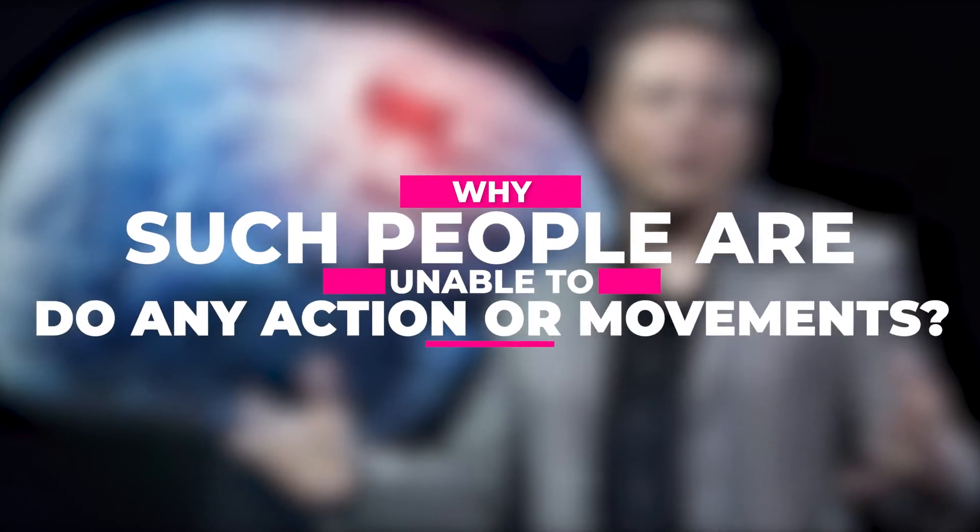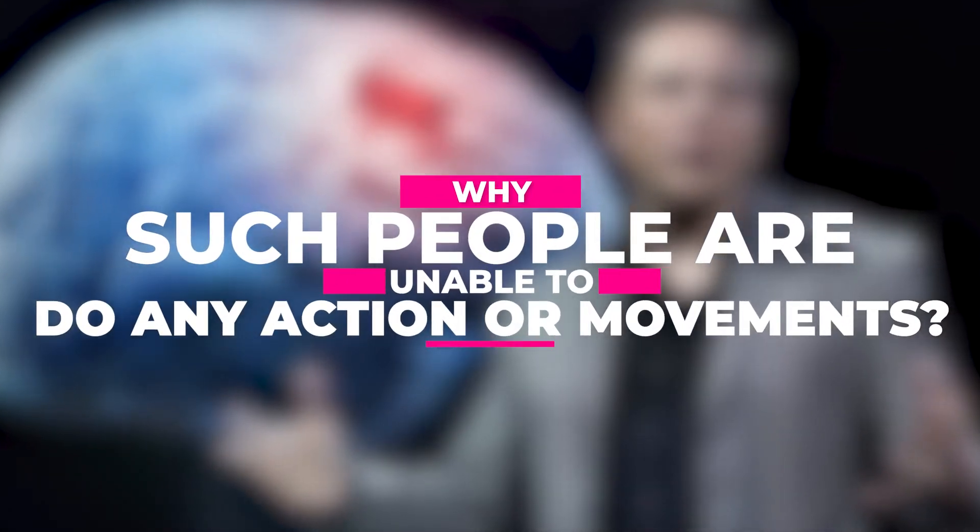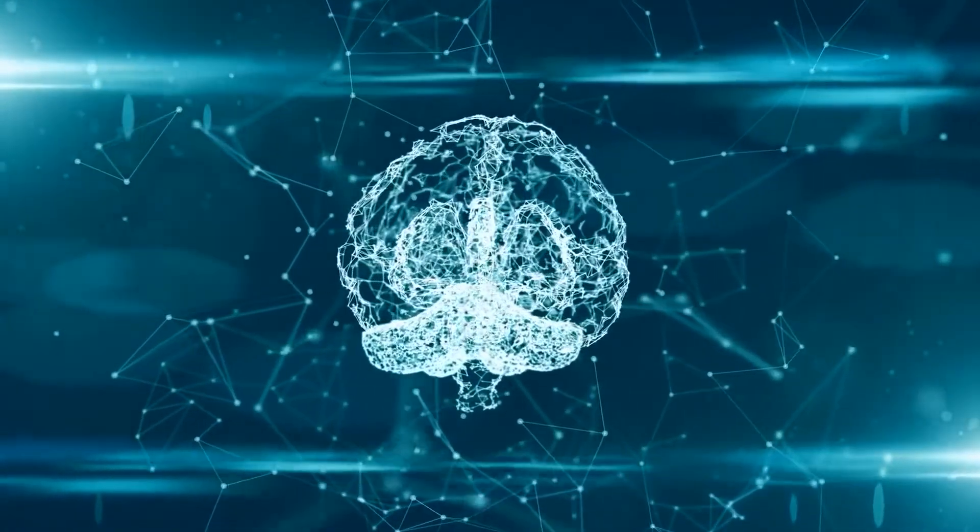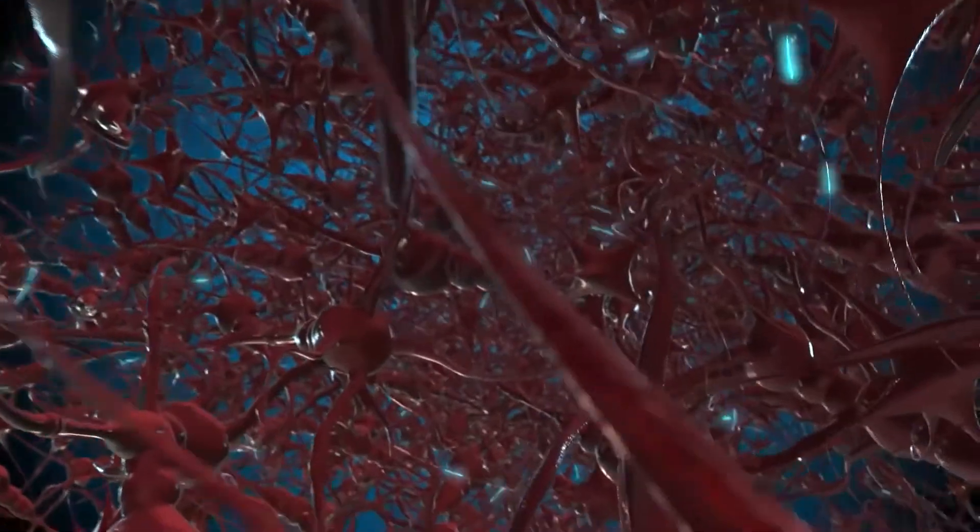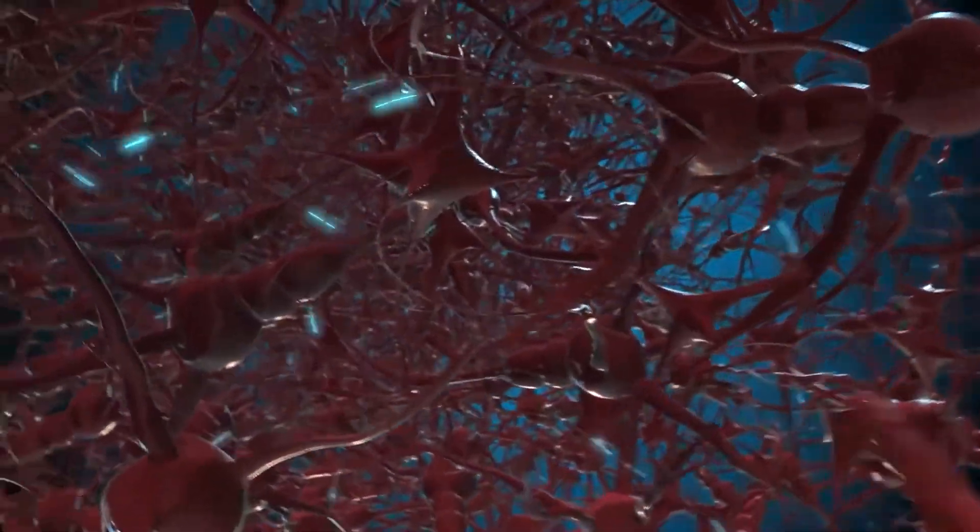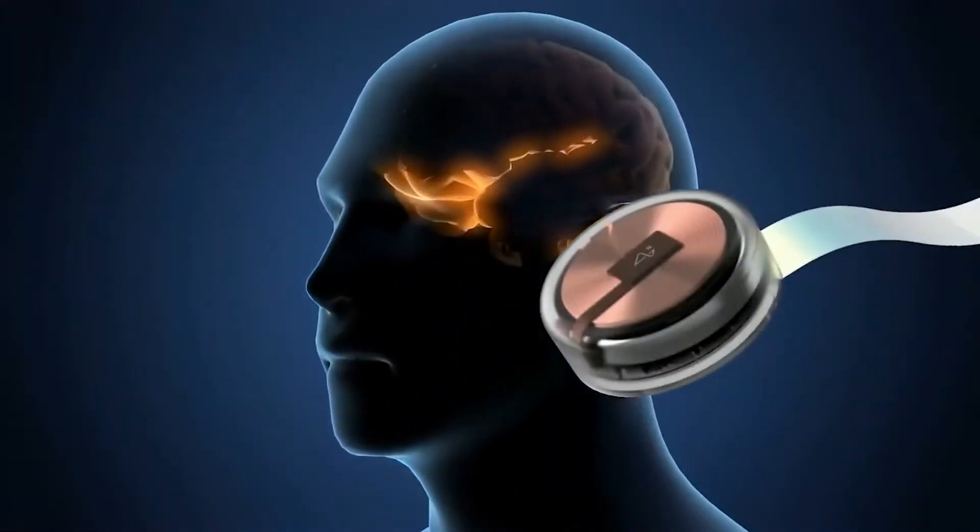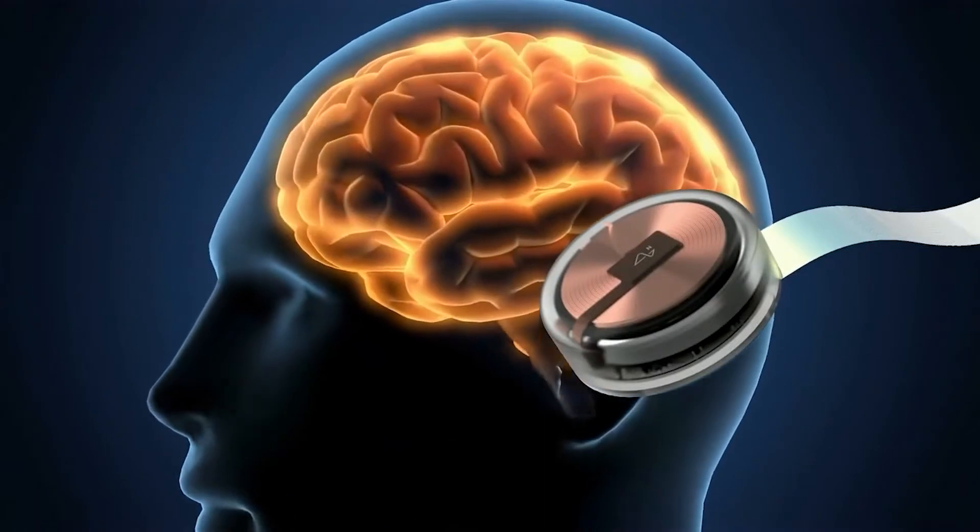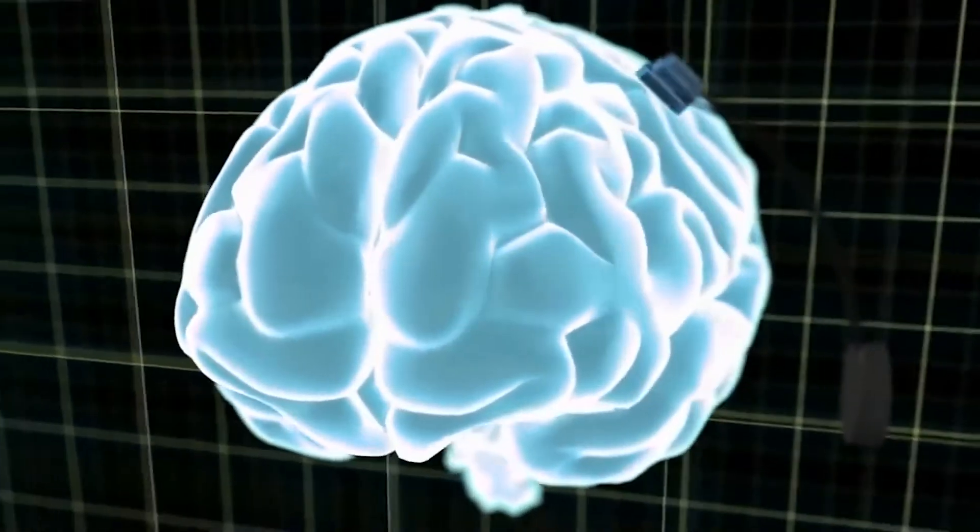Now, the question arises why such people are unable to do any action or show movements. In these people there is a broken network of connections. In simple words, the signals coming from the neurons get lost in their way. As a result, a person fails to move or do any action. Neuralink chip will create an artificial bridge with electrodes that will carry those lost signals to their right place. I am pretty much sure that this 2022 Neuralink improvement will bring countless living paralyzed people back to life.